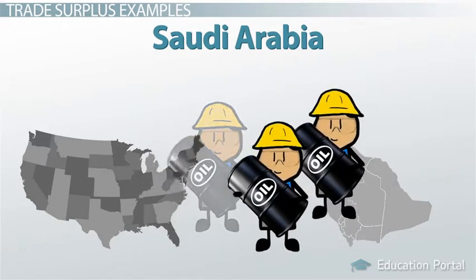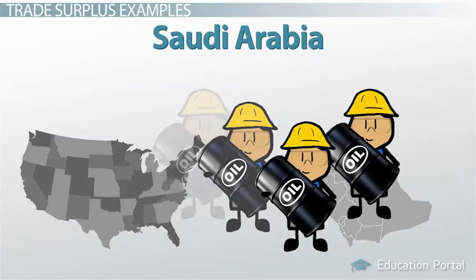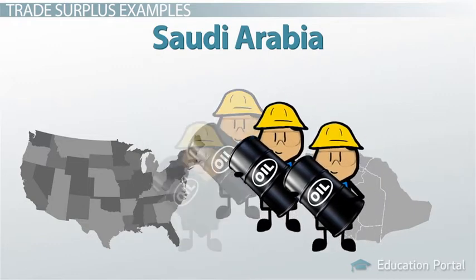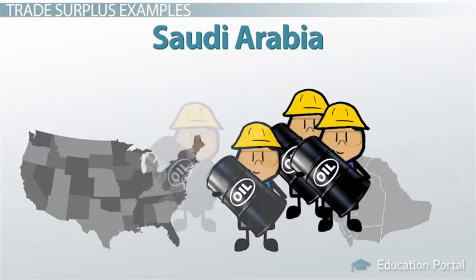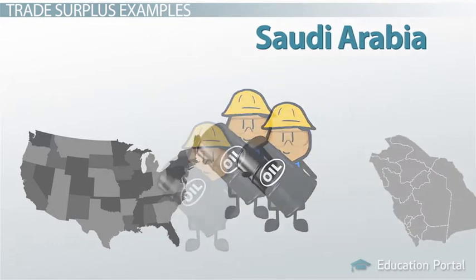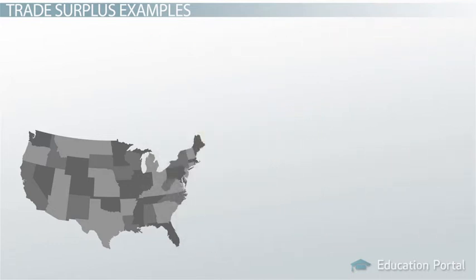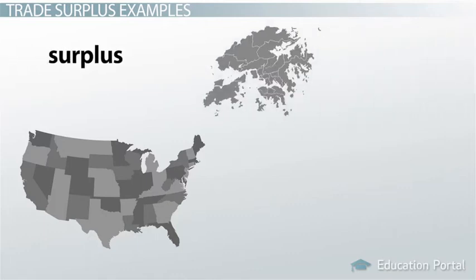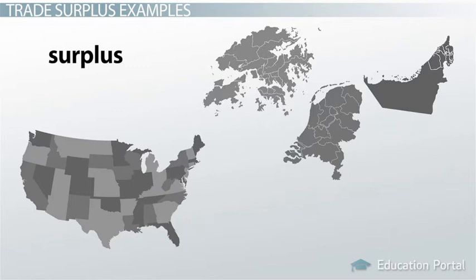This has resulted in Saudi Arabia having very high incomes per capita and the 19th highest overall GDP in the world. It is important to note that some of the largest trading partners that the US often runs yearly surpluses with are Hong Kong, the Netherlands, the United Arab Emirates, Australia, and Brazil.